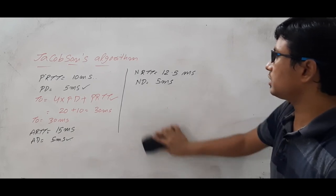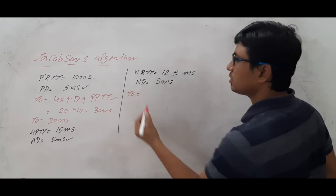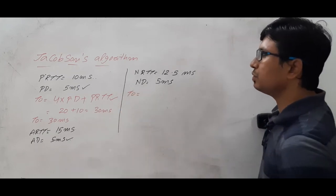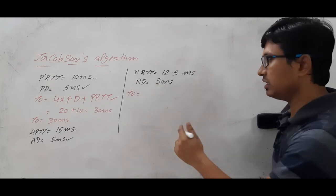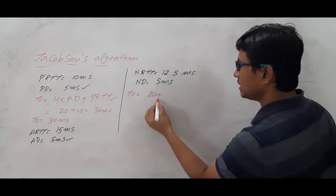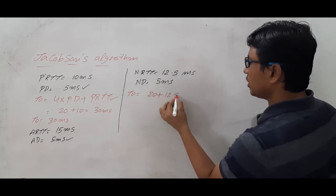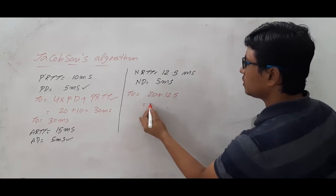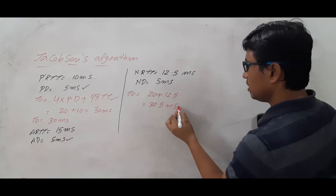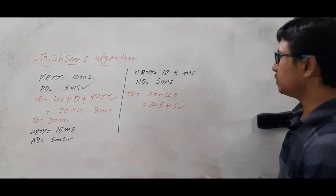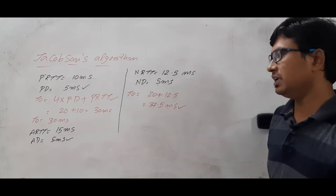Now again we compute the timeout value. Timeout value is equal to 4 into deviation plus round trip time, which is 4 into 5 equal to 20, plus 12.5, equal to 32.5 milliseconds. So you will send a segment and wait for 32.5 milliseconds.